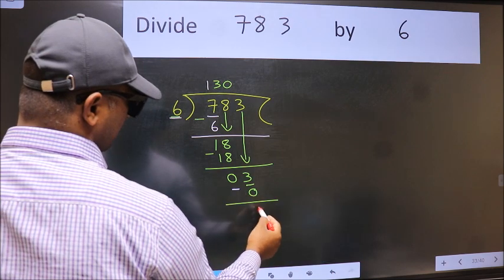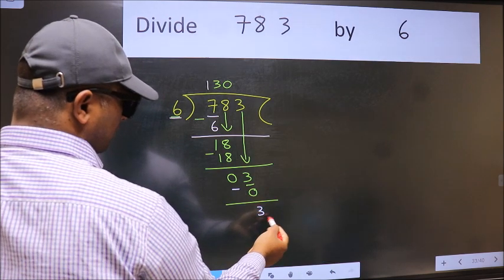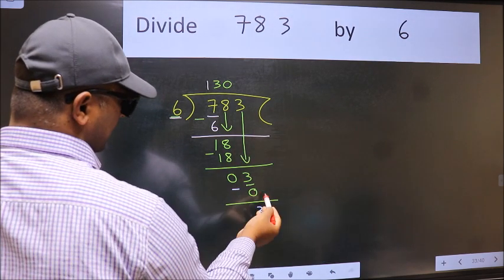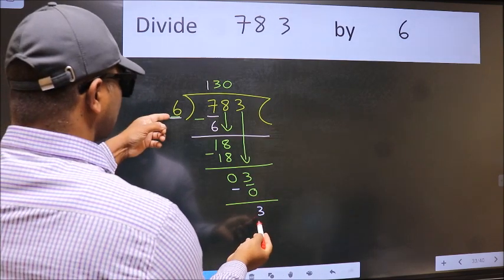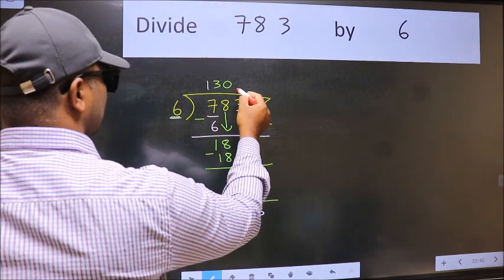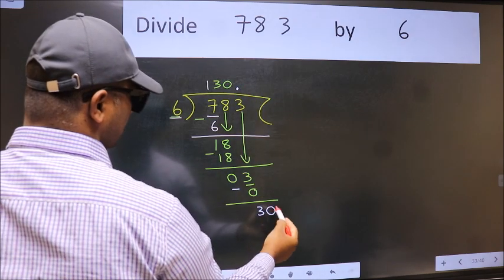Now we subtract. We get 3. Over here, we did not bring any number down. And 3 is smaller than 6. So now we can put dot and take 0.